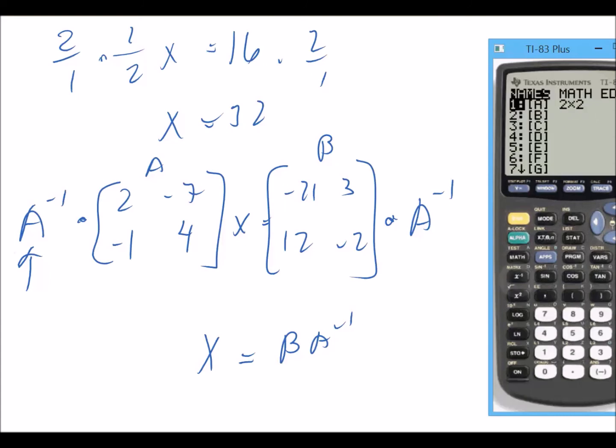And we're going to edit matrix B. Matrix B is also a 2 by 2, 2 rows by 2 columns, negative 21, 3, 12, negative 2.